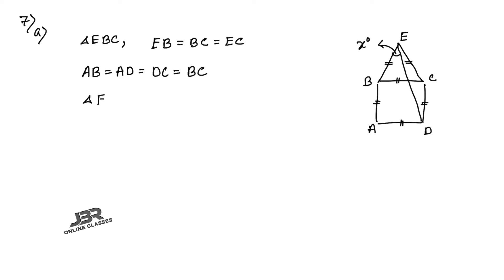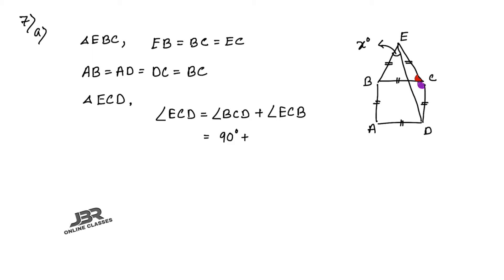In triangle ECD, angle ECD equals angle BCD plus angle ECB. Angle BCD is the angle of the square, so it equals 90°. Angle ECB is the angle of an equilateral triangle, so it equals 60°. Therefore angle ECD = 90 + 60 = 150°.